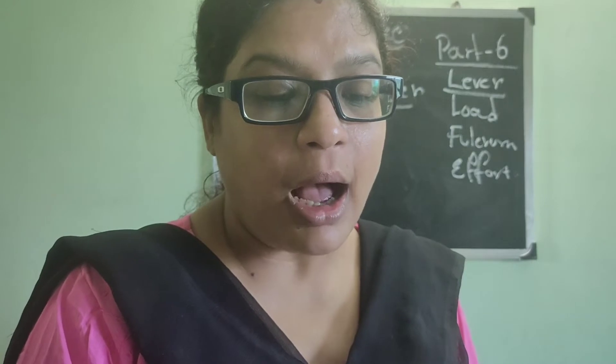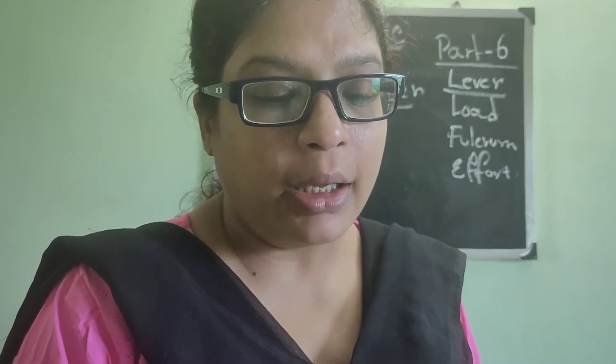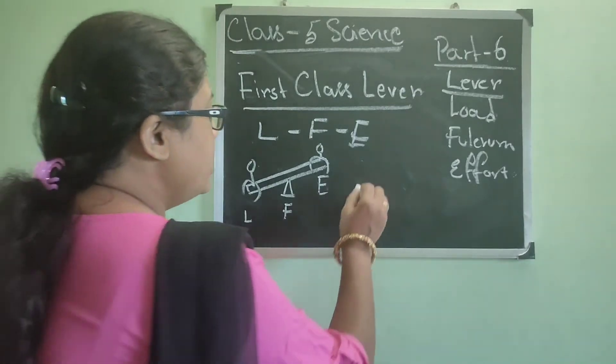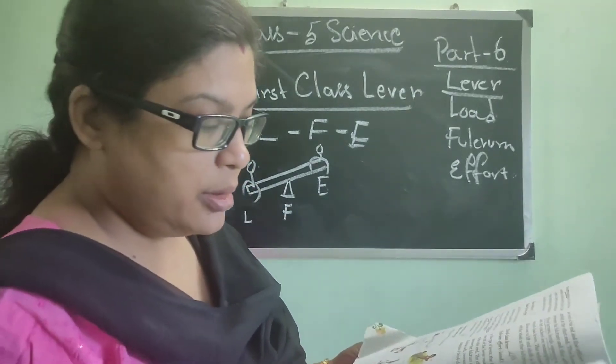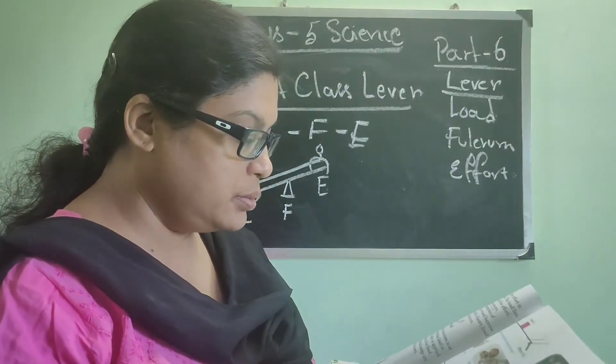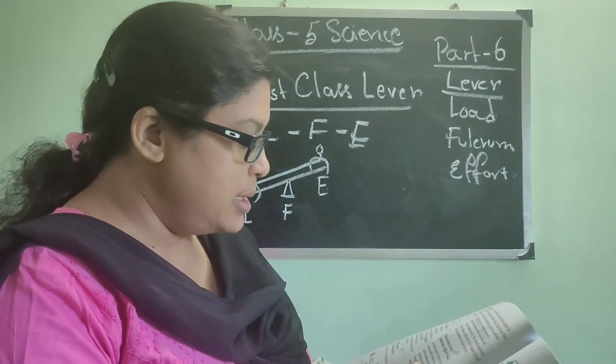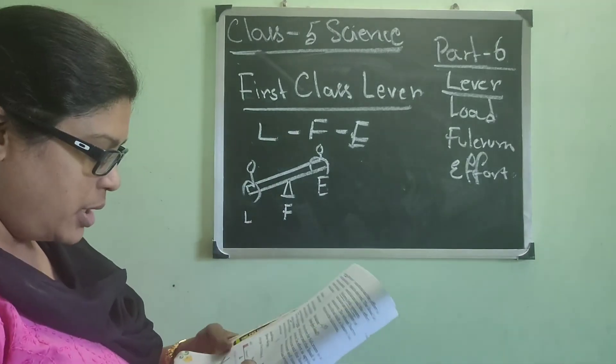Scissors, claw hammer, and plier are the other examples of first class lever. When you use a spoon to open the lid, you can use the first class lever. So see, scissors, how it is working.